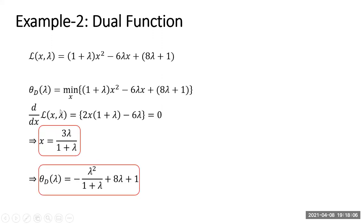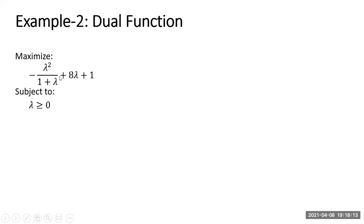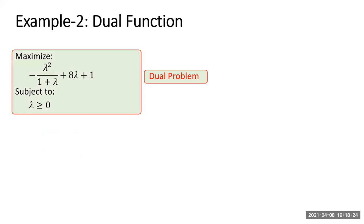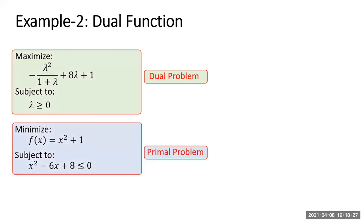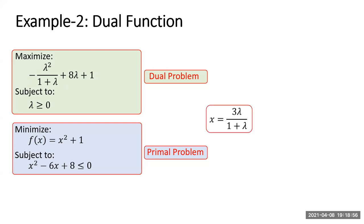The dual problem — maximize θ_d(λ) = −λ²/(1 + λ) + 8λ + 1 subject to λ ≥ 0 — is likely easier to solve than the primal. Once you obtain the optimal λ, you can recover the optimal x using x = 3λ/(1 + λ).